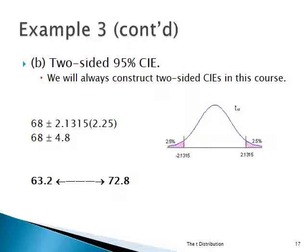By the way, the school is safe because mu could be as high as 72.8. Now, it's a very wide interval, but that's the price you pay for working with a small sample when you don't know sigma. If you don't want the interval to be too wide, take a larger sample.